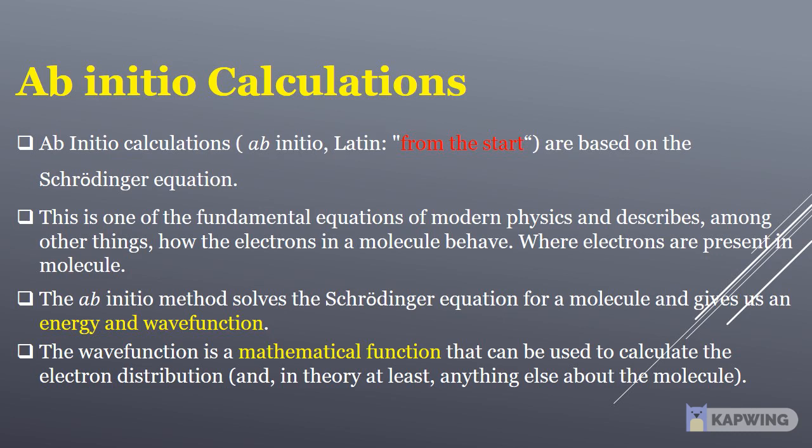The Ab initio method solves the Schrödinger equation for a molecule and gives us an energy and wave function. The wave function is a mathematical function that can be used to calculate the electron distribution, and in theory at least, anything else about the molecule.